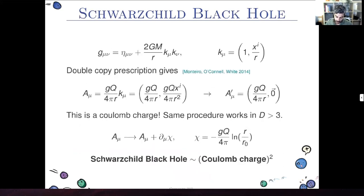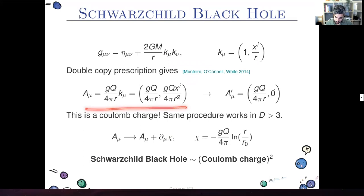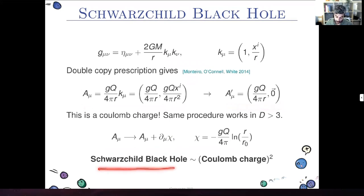One example is the black hole solution, where K_μ is a null vector. Following the double copy prescription — writing A_μ from K_μ, replacing M with Q, replacing couplings — you find a gauge field which, after a gauge transformation, looks exactly like the gauge field of a Coulomb charge. This tells us that the black hole solution is merely the square of an individual Coulomb charge in the classical sense.